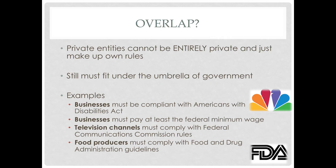So is there overlap between public and private, or are they operating in entirely separate spheres? In short, there is overlap. Private entities cannot be entirely private and just make up their own rules — they are still within the umbrella of government. For example, businesses must be compliant with the Americans with Disabilities Act, which says buildings must be accessible to anyone with a disability. So Target needs ramps for people in wheelchairs. Another example: businesses must pay at least the federal minimum wage. The federal government says if you want to be in business, you must pay employees a federal minimum wage — that's the public entity overlapping with the private entity of Budget Rent-A-Car.